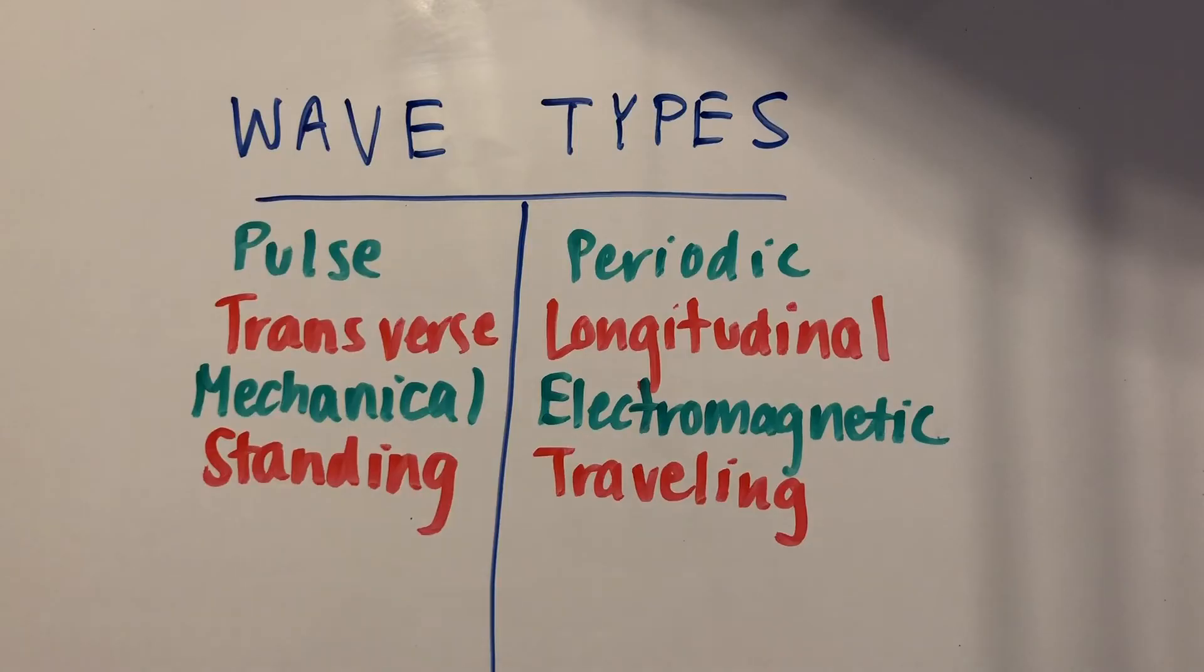So those are the different classifications of waves in physics. Next up, we'll be looking at how waves can interact with each other.